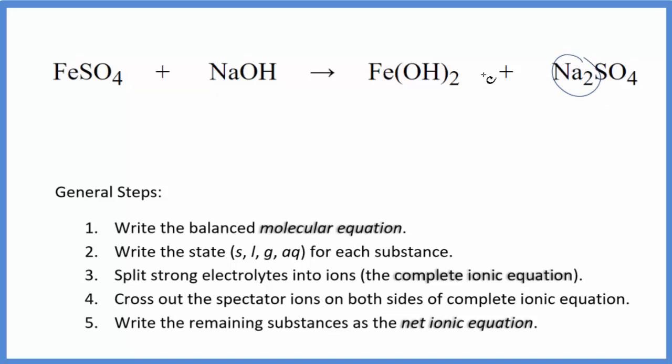I can see that I have two sodium atoms here and one here. I'm going to put a two in front of the NaOH. That balances the sodium atoms. I have two hydroxide ions, so those are balanced on both sides. Then I have a sulfate here and an iron here. So those are balanced as well. So this is the balanced molecular equation for FeSO4 plus NaOH.